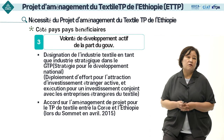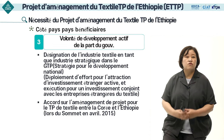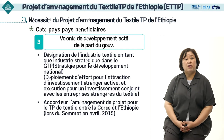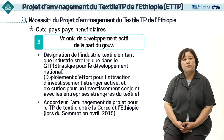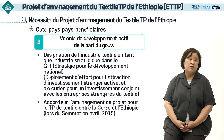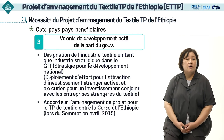Par conséquent, le gouvernement éthiopien a établi avec une volonté active la stratégie pour le développement national, qui est le GTP, et a désigné l'industrie textile comme la principale industrie stratégique du pays. Elle a ainsi déployé ses efforts afin d'attirer des investissements étrangers actifs et a encouragé les co-entreprises d'investissement avec des entreprises textiles étrangères. Dans ce cadre, l'État a œuvré avec ardeur afin de promouvoir le projet de textile technoparc de la Corée et un accord a été conclu en avril 2015 lors du sommet entre les deux pays.